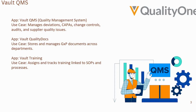Now I'll talk about Vault Training. Vault Training links learning directly to your processes and documents. When an SOP changes, related training is automatically assigned so no one misses a critical update. Managers can see exactly who is trained, who is overdue, and who is ready for an audit. The alternative application is Glimpse, which most of you already know.